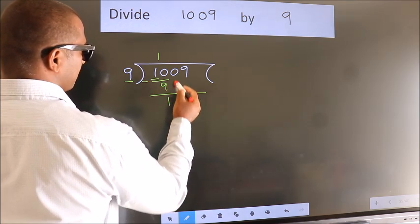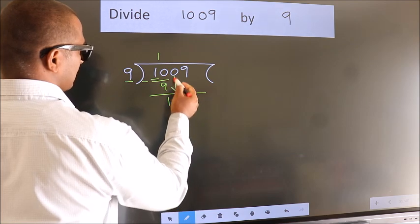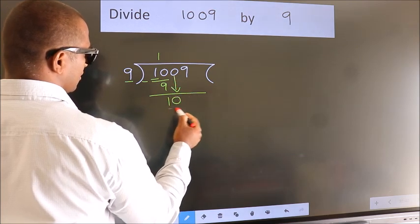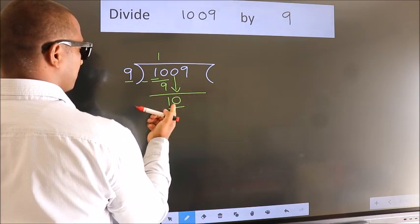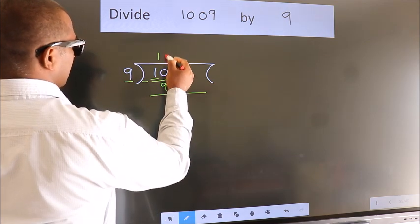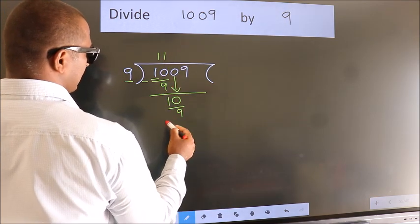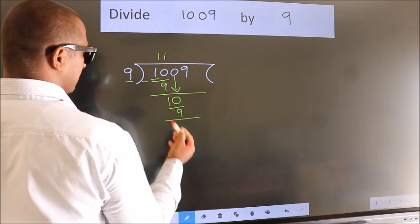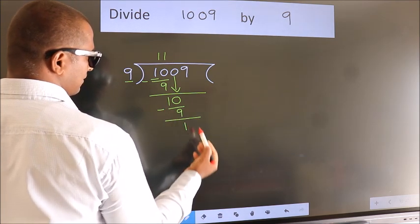After this, bring down the beside number. So 0 down. So 10. A number close to 10 in the 9 table is 9 ones, 9. Now we subtract. We get 1.